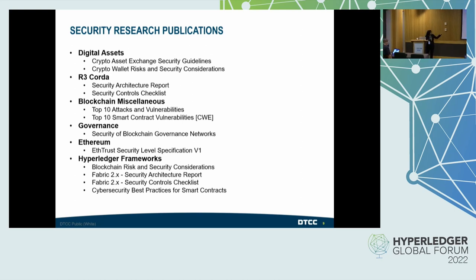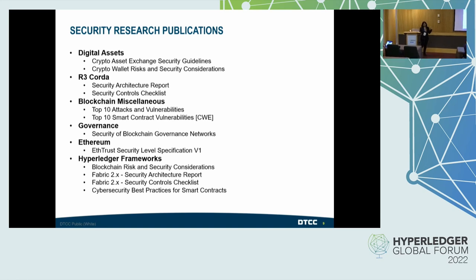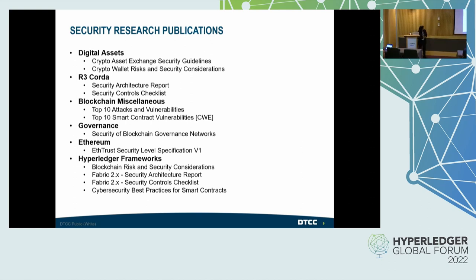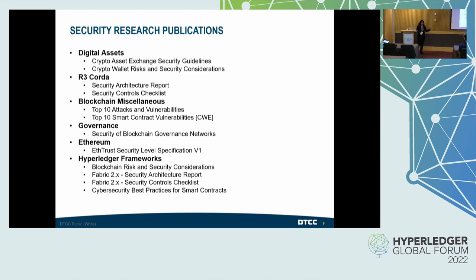These are some of the security research publications we've published since starting our initiative in September 2020. If you're interested in reading those articles, please go to CSA Cloud Security Alliance — they're all in the public domain, not behind a paywall. Anyone can register at CSA and download. The ETH Trust security level spec is under Enterprise Ethereum Alliance and also in the public domain. Two research artifacts are work in progress and will be published in Q1 or Q2 of 2023.